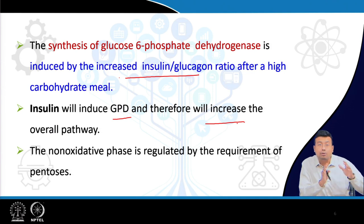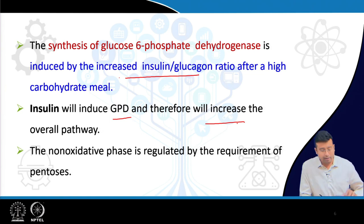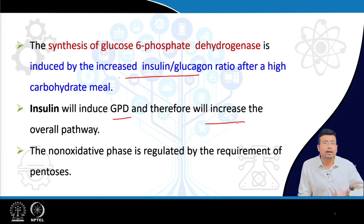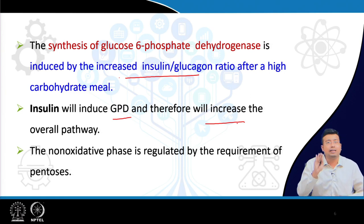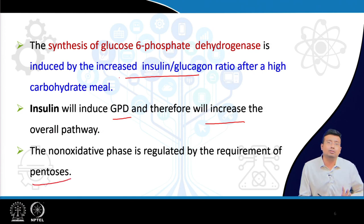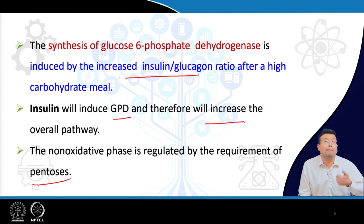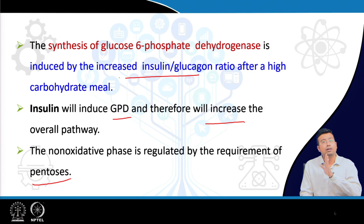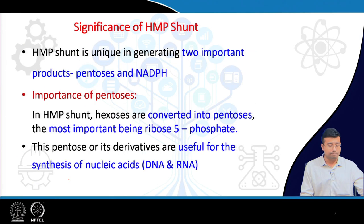In the oxidative phase, glucose-6-phosphate dehydrogenase acts and mainly carbon dioxide is produced. In the non-oxidative phase, various pentoses are produced. The non-oxidative phase is regulated by the requirement of pentoses — pentose is required for production of DNA and RNA. If more pentose is needed, HMP shunt is upregulated. When there is no requirement of pentoses or less insulin and high glucagon, the process is inhibited.